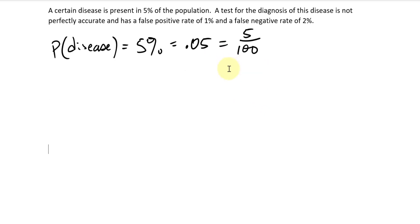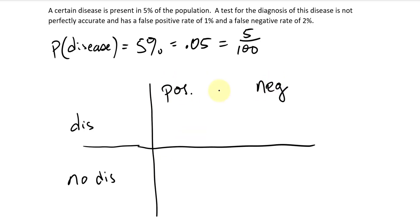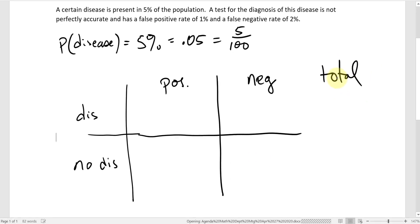Now we're going to build a table that has a row for disease and no disease, and then we have the possibility that somebody tests positive or they test negative. There are actually four possibilities: you can test positive and have the disease; you can test negative and have the disease; you can test positive but not have the disease; and you can test negative and not have the disease. For this table, I'm also going to need totals.